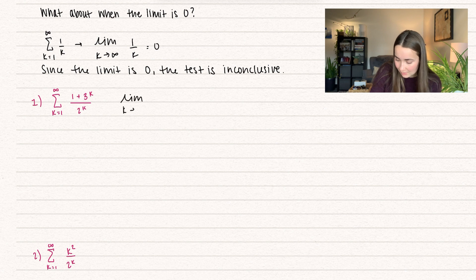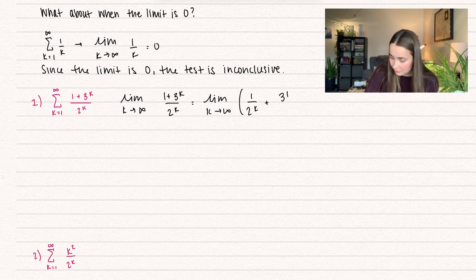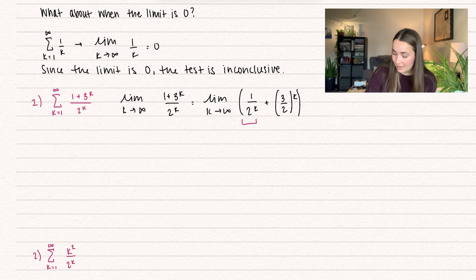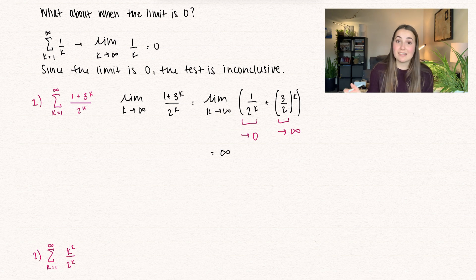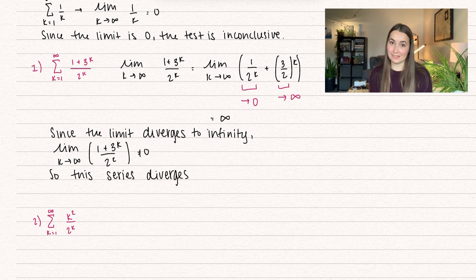We take the limit as k approaches infinity of our formula. We separate it and simplify: write it as 1 over 2 to the k, plus 3 to the k divided by 2 to the k. Since both have the same exponent k, we can rewrite the second term as (3/2) to the power of k. Now, 1 over 2 to the k goes to 0 as k gets large, but since 3 is larger than 2, the numerator grows faster than the denominator, so (3/2)^k diverges to infinity. This limit equals infinity, which is not equal to 0, so the series diverges.